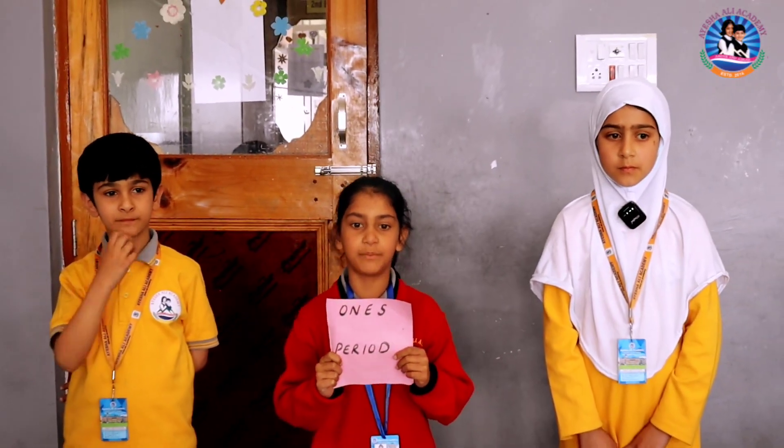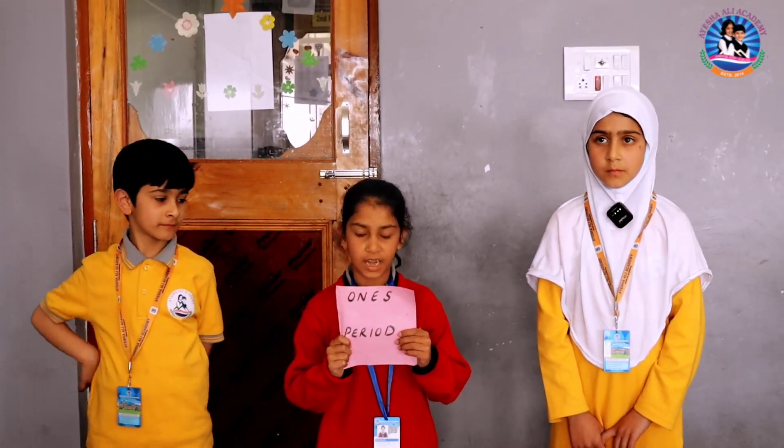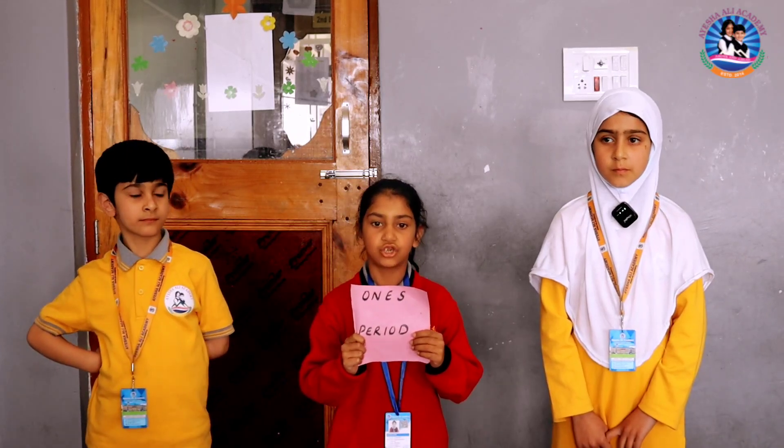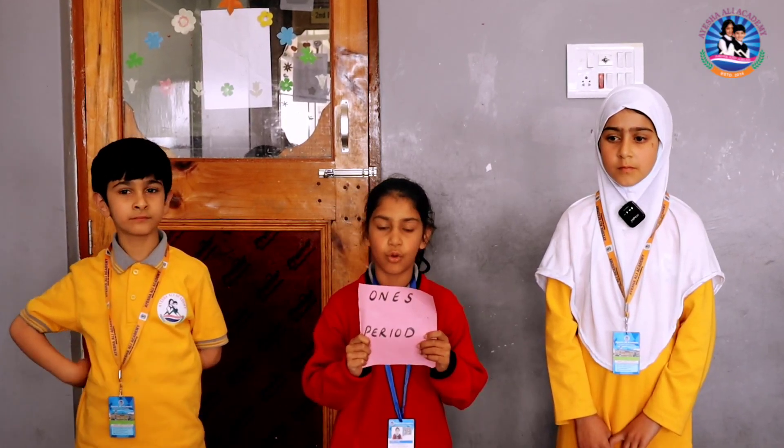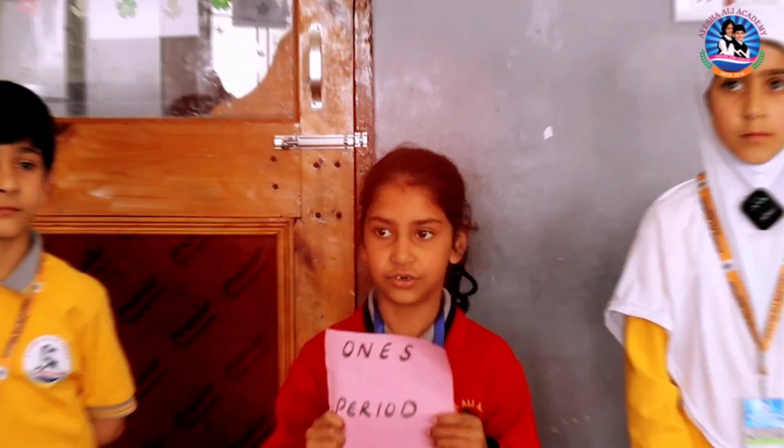In the one's period, there are three places: one's place, ten's place, and hundred's place. The short form of one's is O, ten's is T, and hundred's is H.